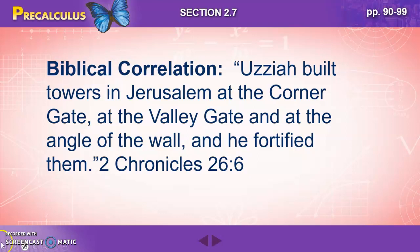Our biblical correlation comes from 2 Chronicles 26:6, where Uzziah built towers in Jerusalem at the corner gate, at the valley gate, and at the angle of the wall, and he fortified them.